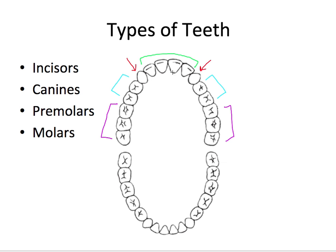So again, we have the incisors, the canines, the first and second premolars, and the first, second, and third molars. This is the same layout for the mandibular arch as well.